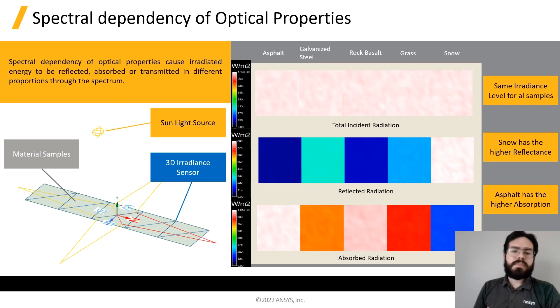Here, we have a practical example. On the left, we can see our simulation setup. We have five material samples exposed to the same sun radiation. On the right, we can see the results from the simulations. We have asphalt, galvanized steel, rock basalt, rust, and snow.